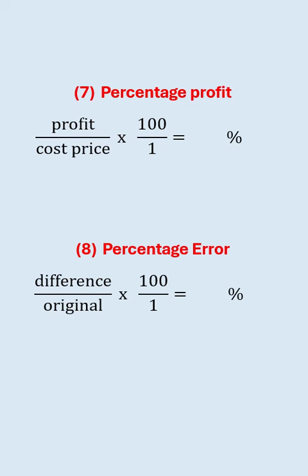Percentage profit is profit over cost price times 100 over 1. This is the same for percentage profit or loss. And percentage error is given as difference over original times 100 over 1.